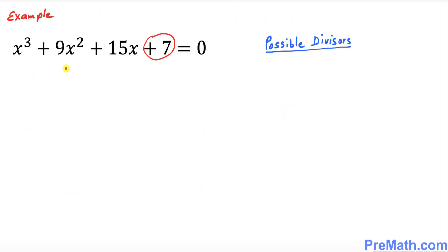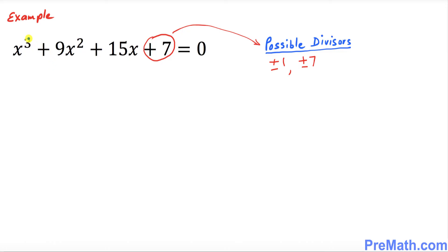Let's go ahead and get started with the very first example. We have this cubic equation — I want you to focus on the very last number, which is positive 7. What are the possible divisors or factors of this number? The possible factors are positive or negative 1 and positive or negative 7. Now, the highest degree of this cubic equation is 3, which means we must have three solutions.